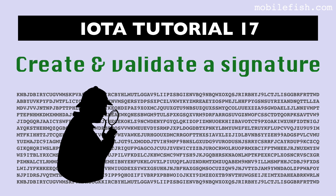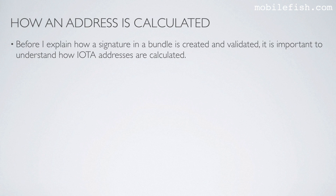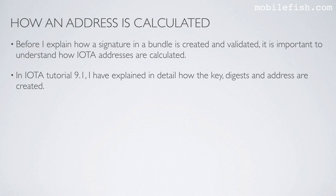In this video I will explain how a signature is created and validated. Before I explain how a signature in a bundle is created and validated, it is important to understand how IOTA addresses are calculated. In IOTA tutorial 9.1 I have explained in detail how the key, digest and address are created. Here is a short explanation.